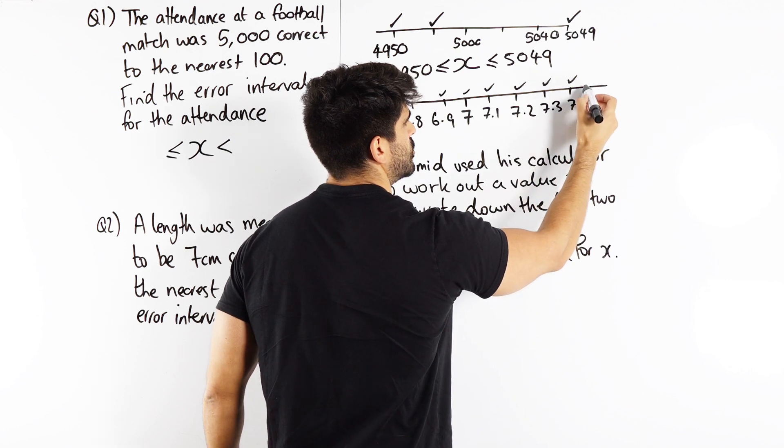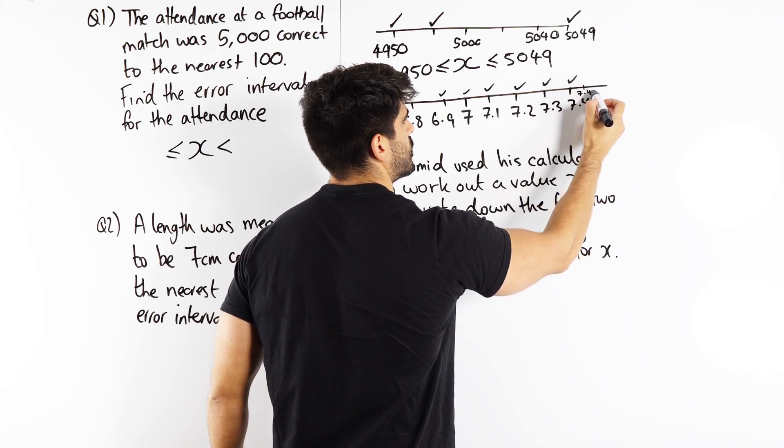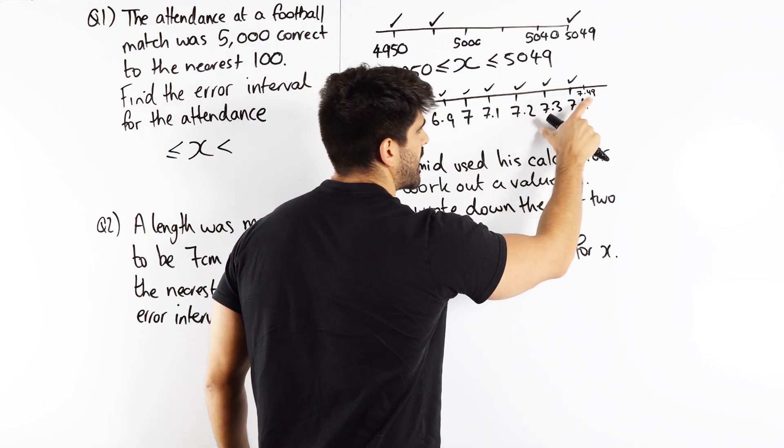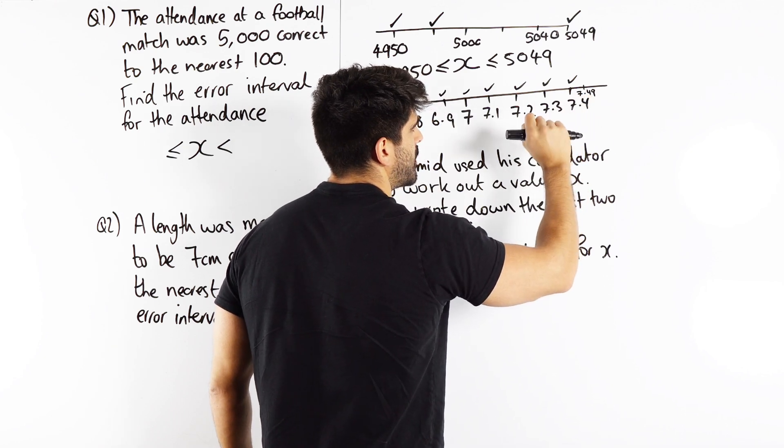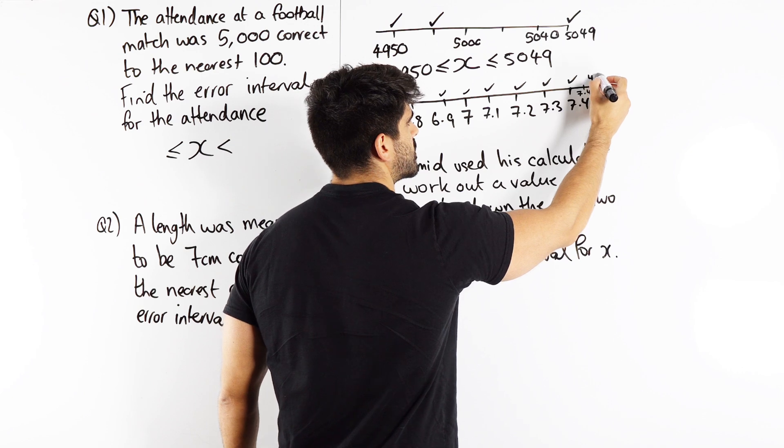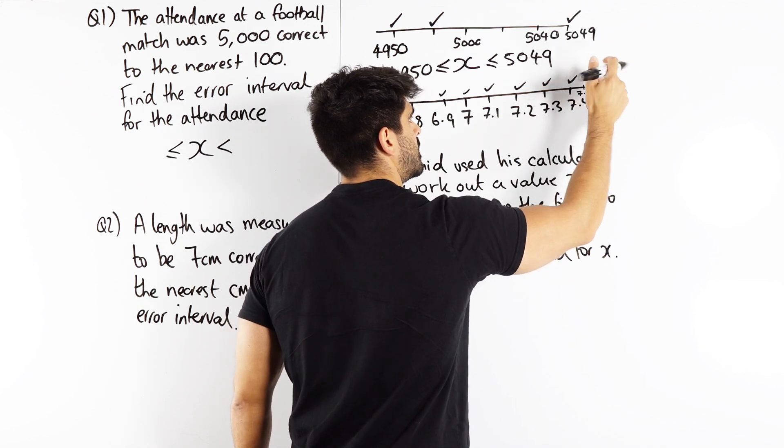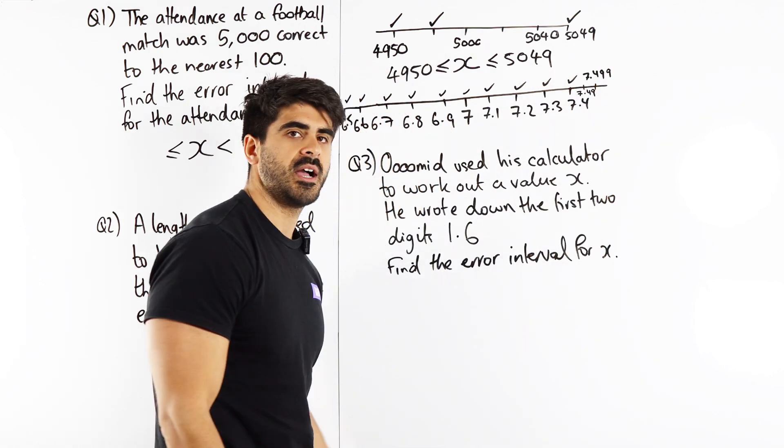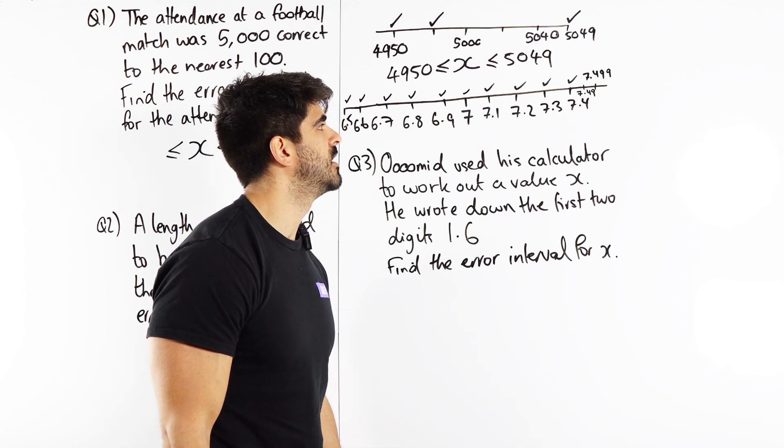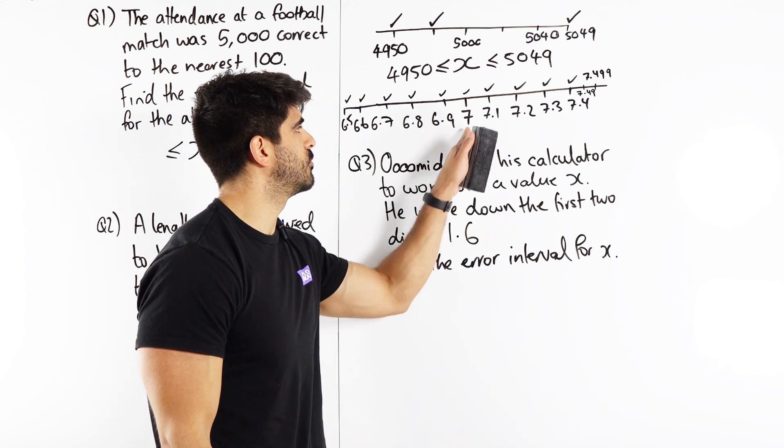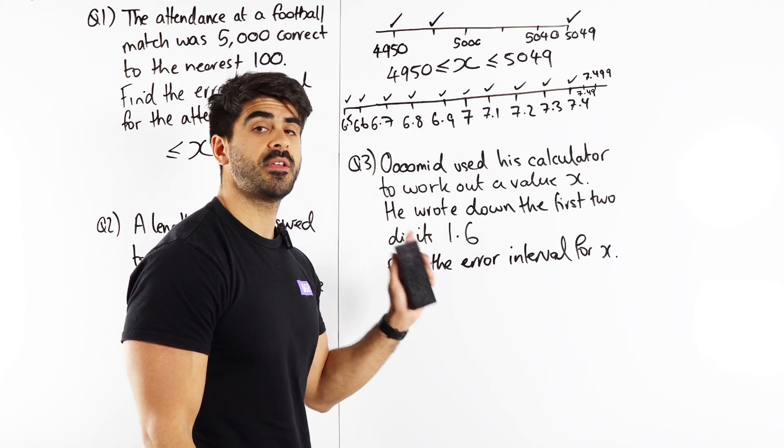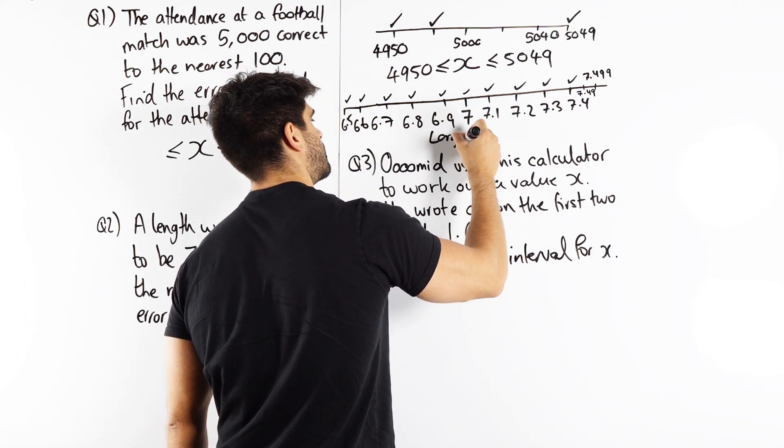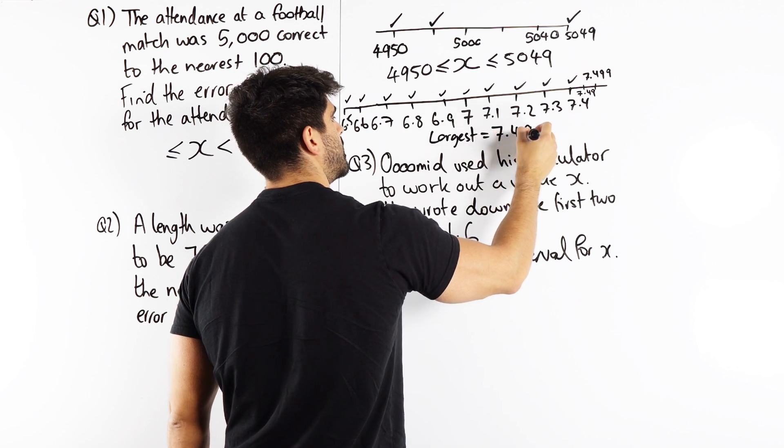But then I could go even further. 7.49, add another 9. I could keep adding 9s. In fact, the largest possible number that still rounds to 7 is 7.49 recurring. So your largest is actually 7.49 recurring.